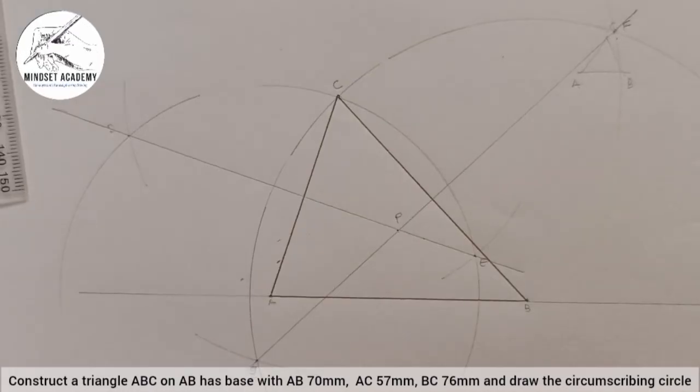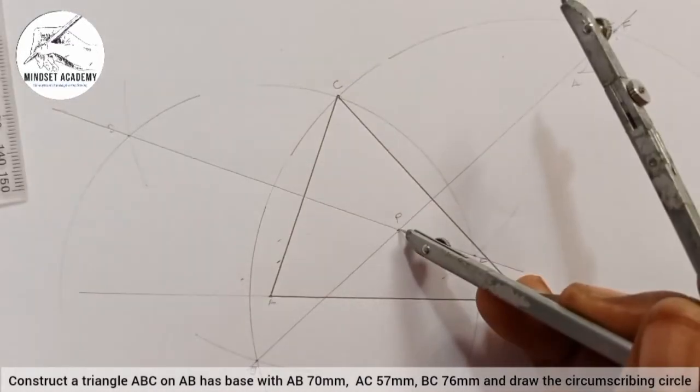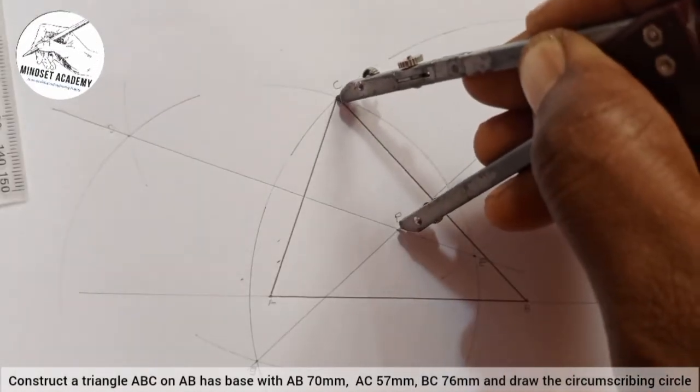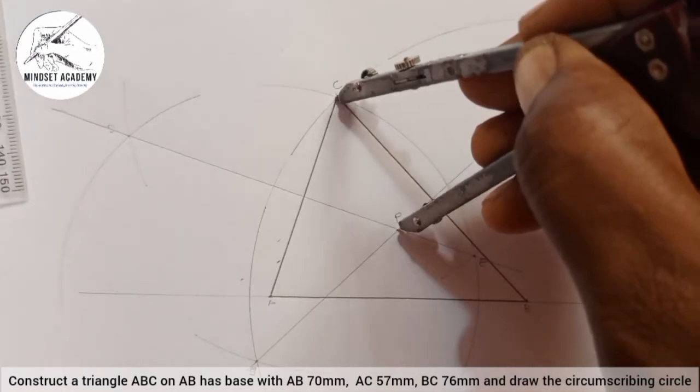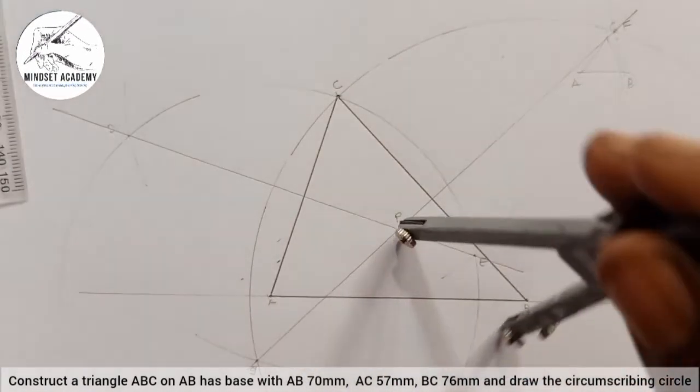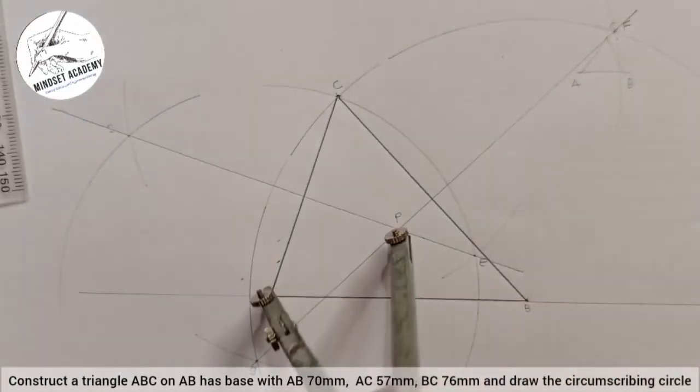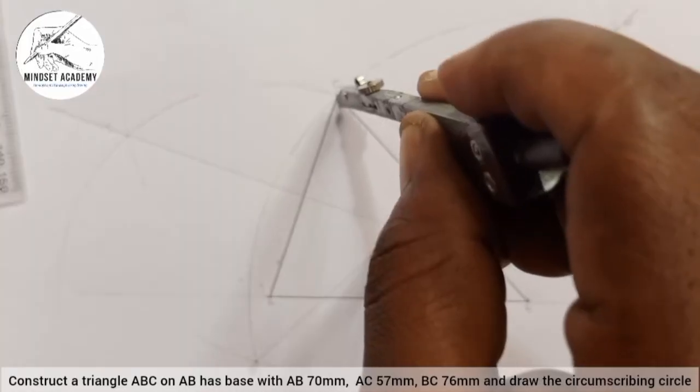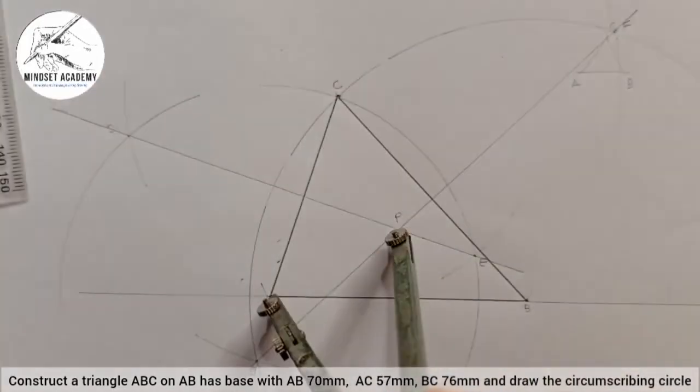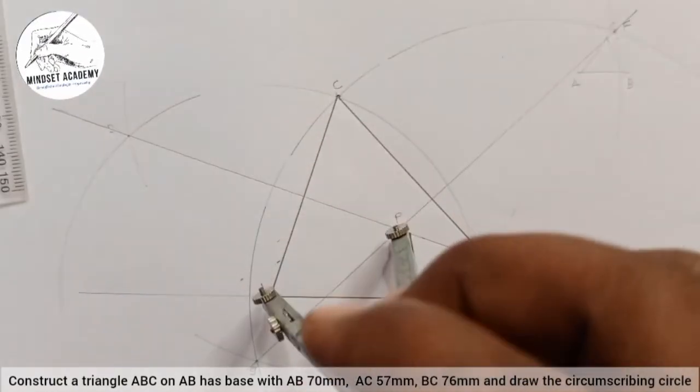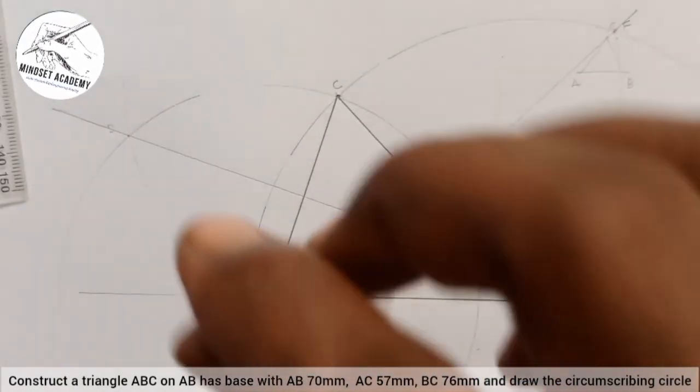So I am going to take my compass and place it at P. Take it to any of the apex points, either point A, B, or C, any of them. Then I am going to gauge, make sure that it is touching the three points of the triangle. And you just draw.